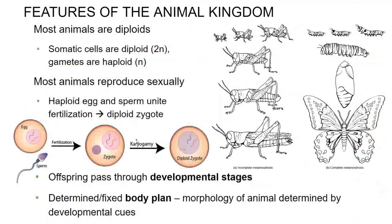Most animals are diploids, and we use that word 'most' because there are some exceptions. The gametes are going to be haploid. A gamete, remember, is an egg and a sperm, and when an egg and a sperm join together, we end up with a zygote. After karyogamy, these two join together to create a true diploid cell, which can develop into an adult individual.